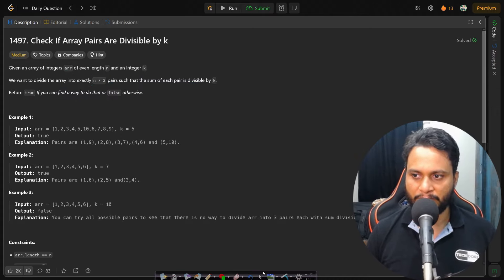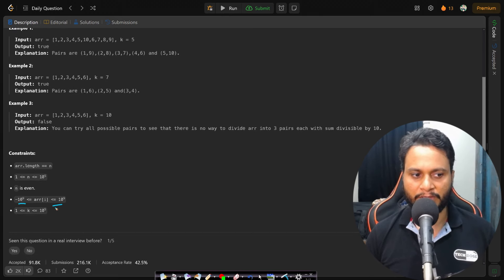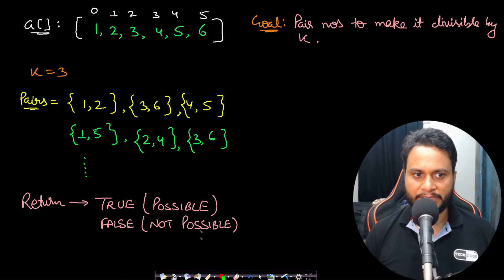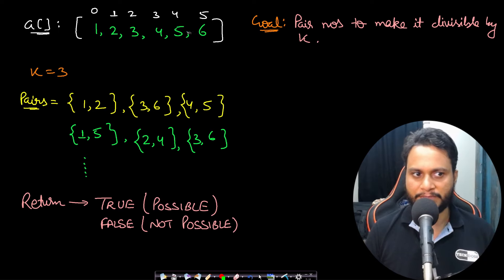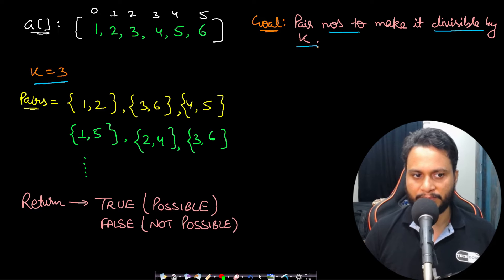Looking at the constraints, we can have both positive and negative numbers, so modulo arithmetic will work differently on them. Let's look at an example for better understanding. Say our given array is [1, 2, 3, 4, 5, 6] and our k value is equal to 3. Our goal is to pair the numbers to make each pair's sum divisible by k.